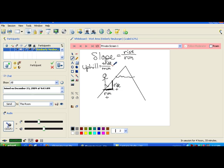Positive divided by positive is positive. So when you're going uphill, your slope is positive.